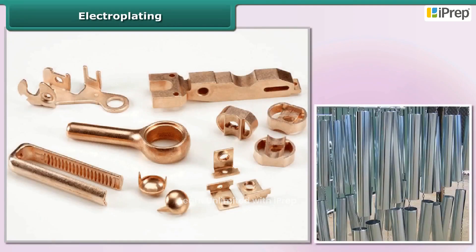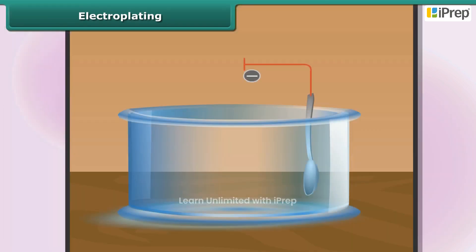Electroplating is common practice to coat articles made of cheap metals such as iron or steel with a thin layer of less reactive metal. A steel object, for example a spoon, is connected to the negative terminal of the current source.